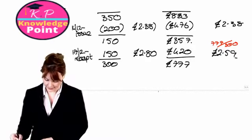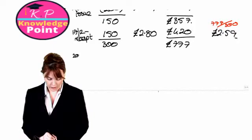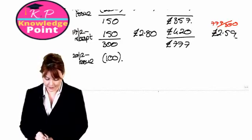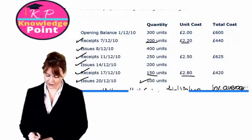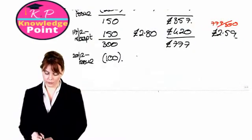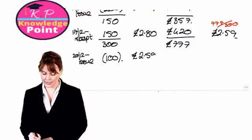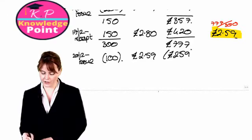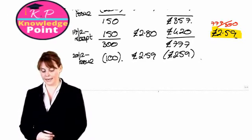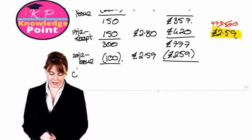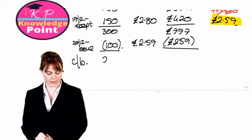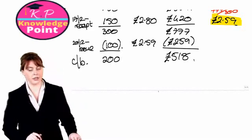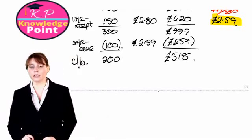Finally, we have our last issue of 100 units on the 20th of December. We issue those units at our most recent average cost of 2 pounds 59 pence, giving a total issue value of 259 pounds. At the end of the period we have a closing inventory of 200 units with a value of 518 pounds, which will be our opening inventory for the next period.